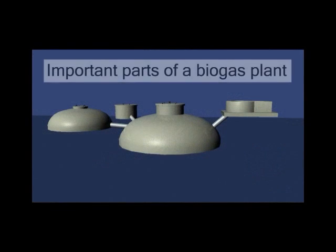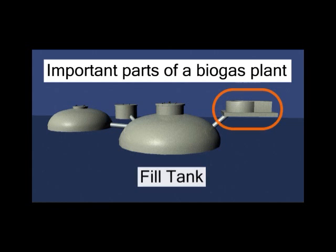There are four main tanks in a biogas plant. The fill tank is where the food and animal waste enters the plant.